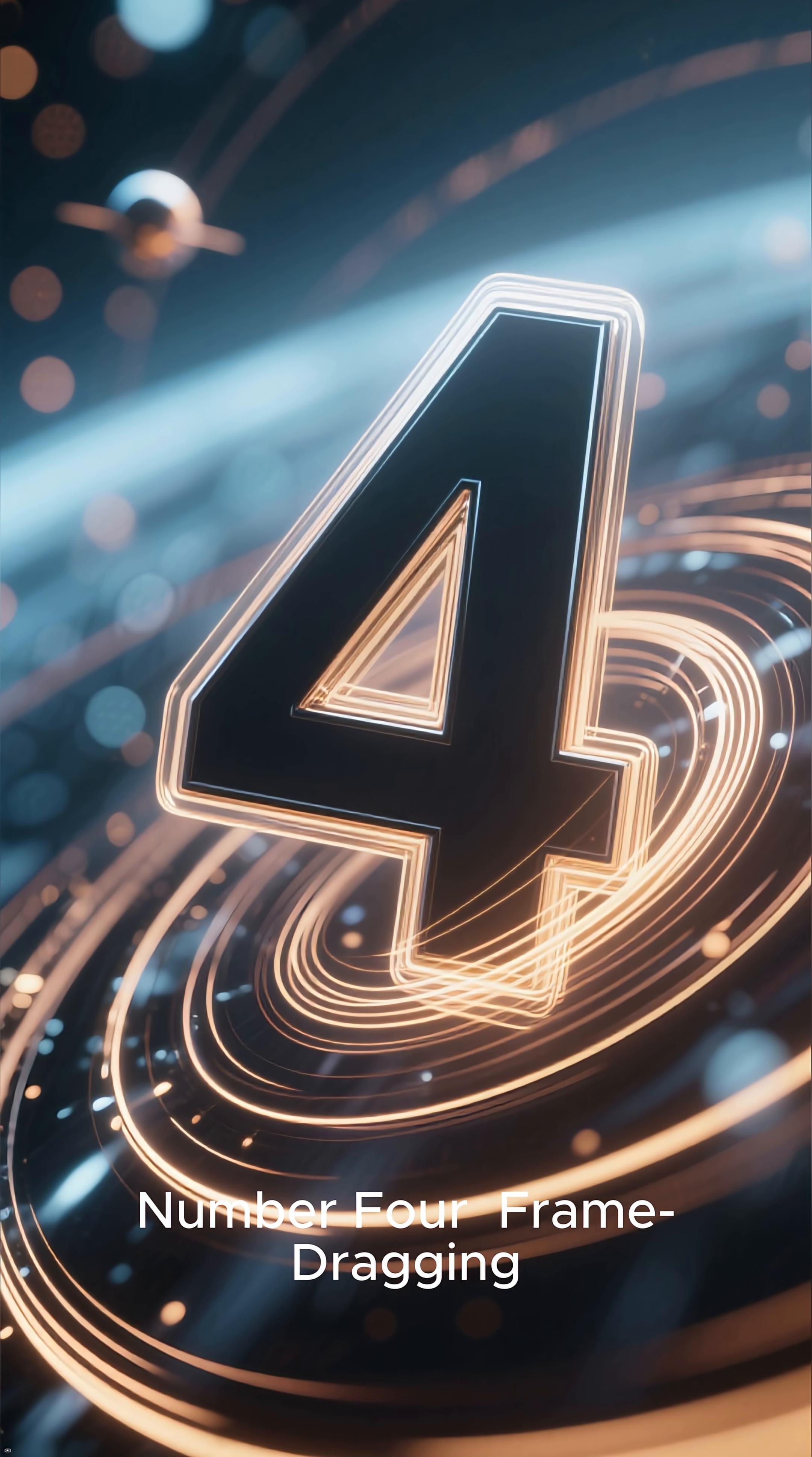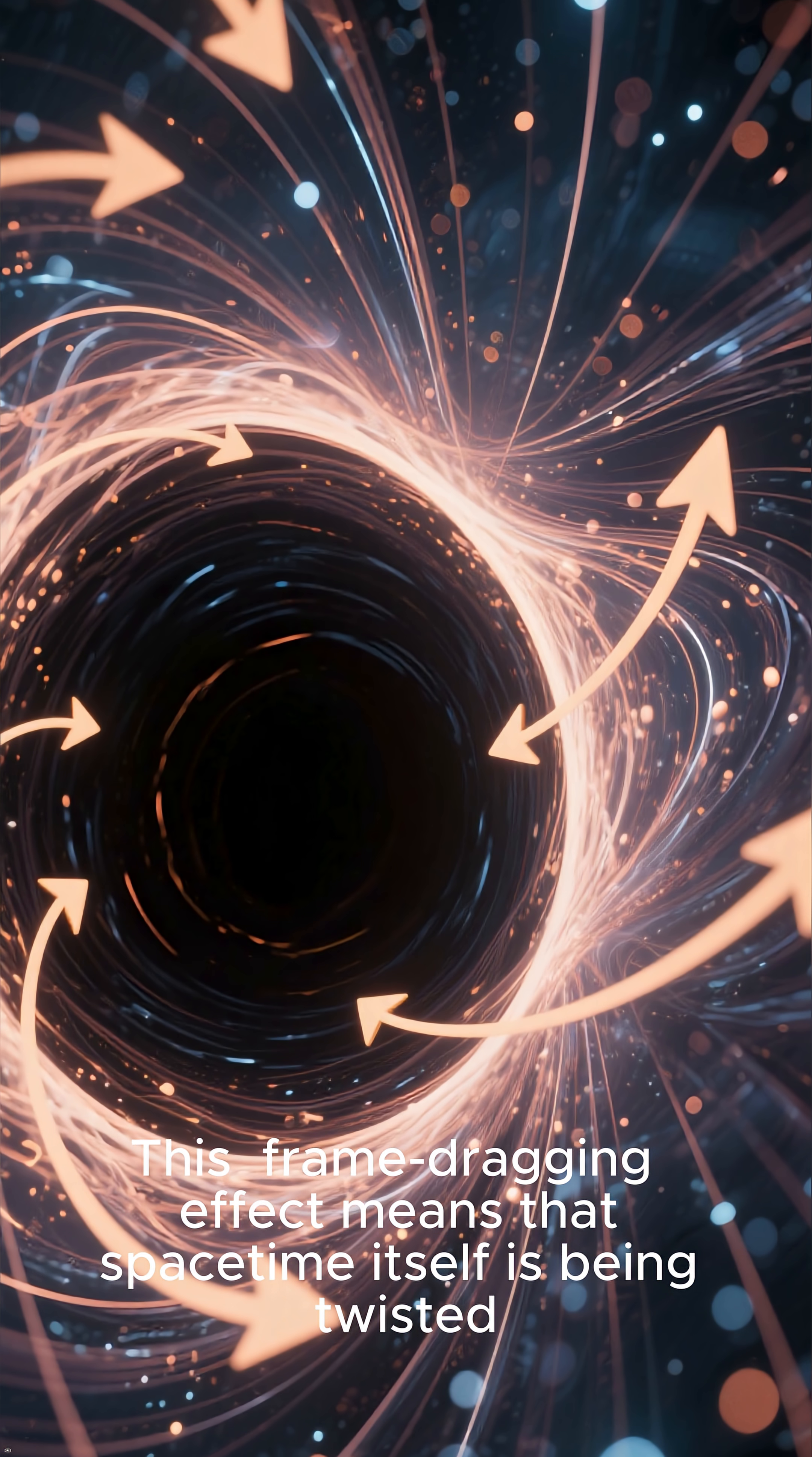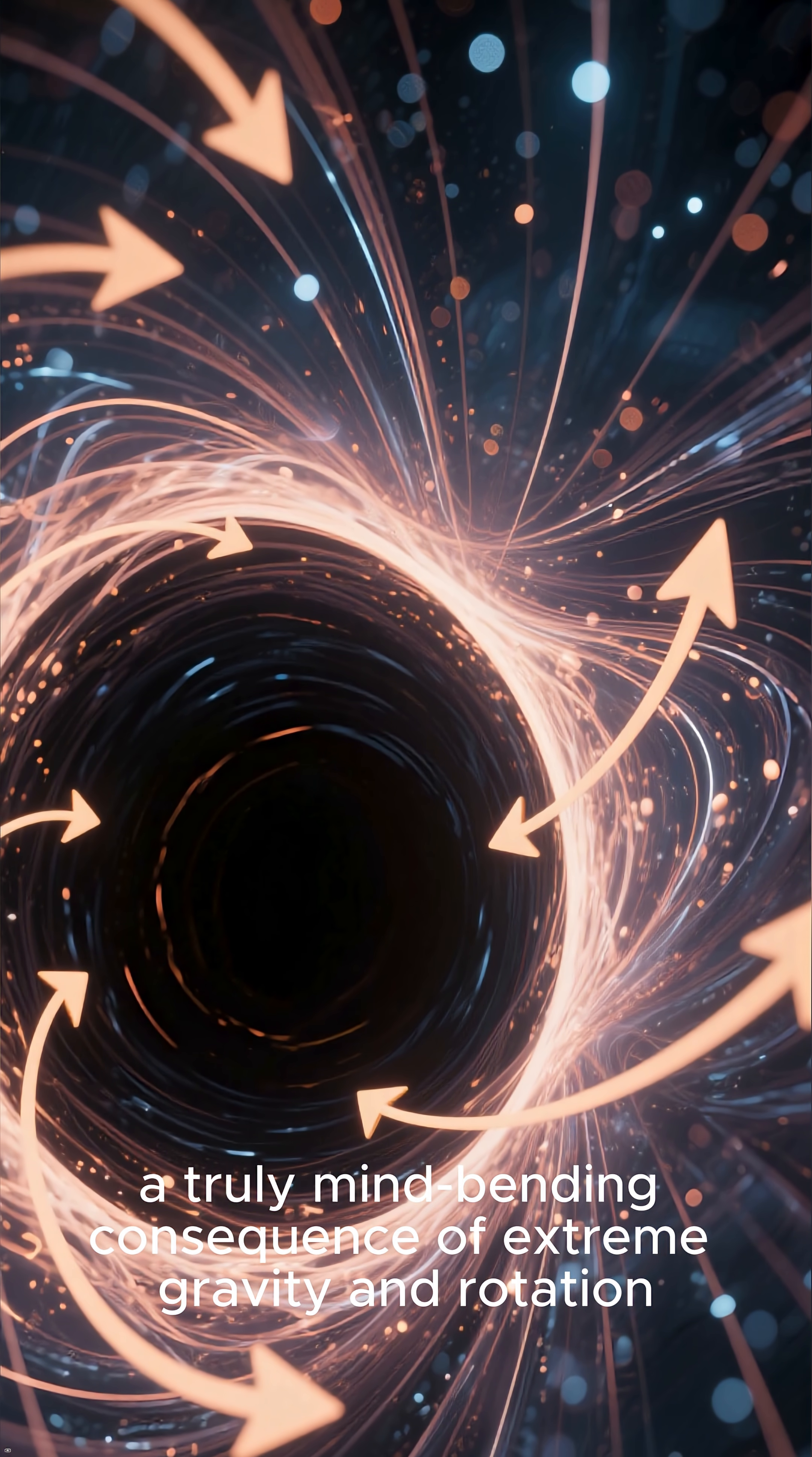Number four: Frame dragging. A massive spinning object like a rapidly rotating black hole doesn't just curve space-time, it also drags it around with it, like a spoon stirring honey. This frame-dragging effect means that space-time itself is being twisted and pulled by the rotating mass, a truly mind-bending consequence of extreme gravity and rotation.